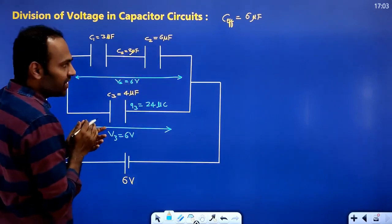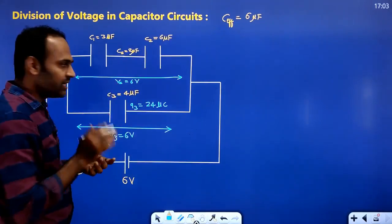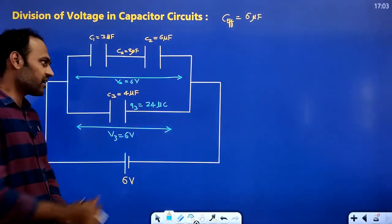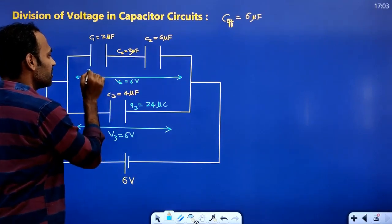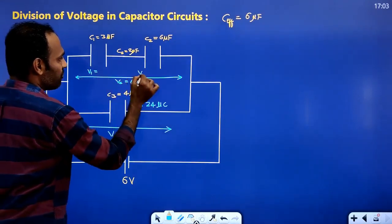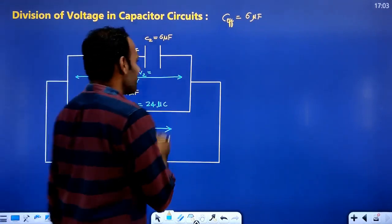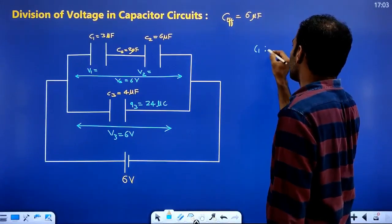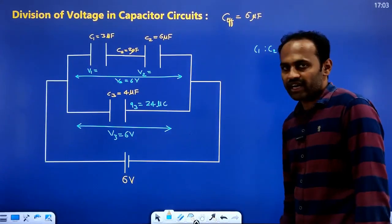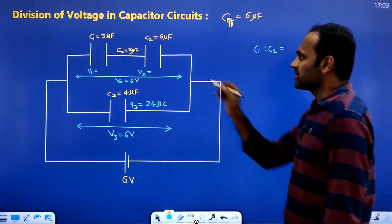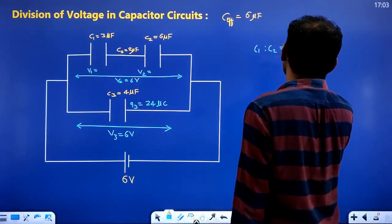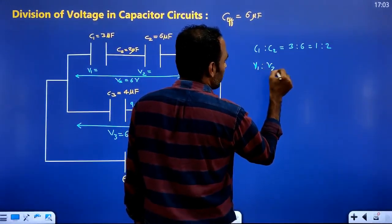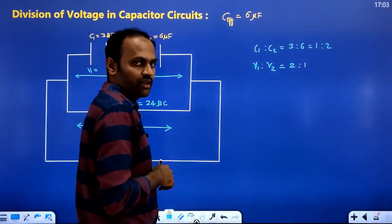Now the 6 volts across the series combination has to be divided between the two series capacitors. C1 to C2 ratio is 3 to 6, which is 1 to 2. Therefore V1 to V2 is 2 to 1 (inversely proportional). The sum of the ratio is 3.